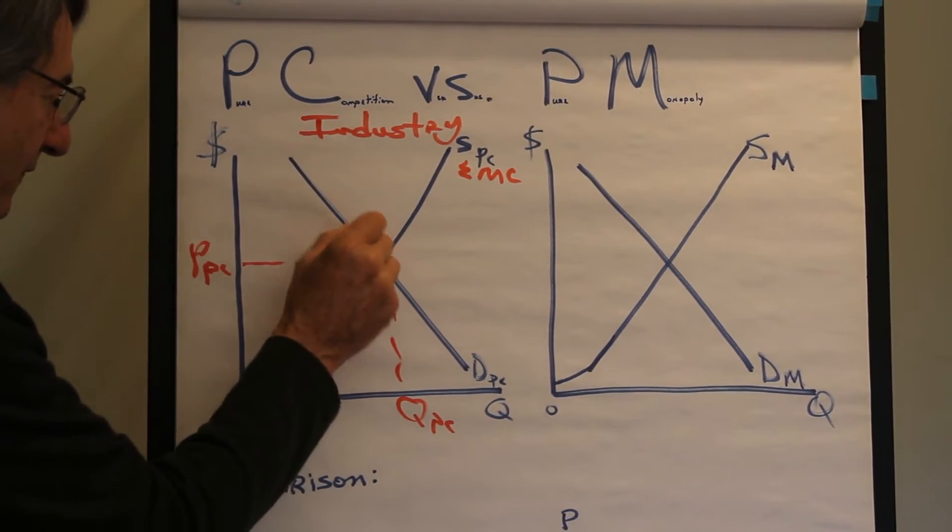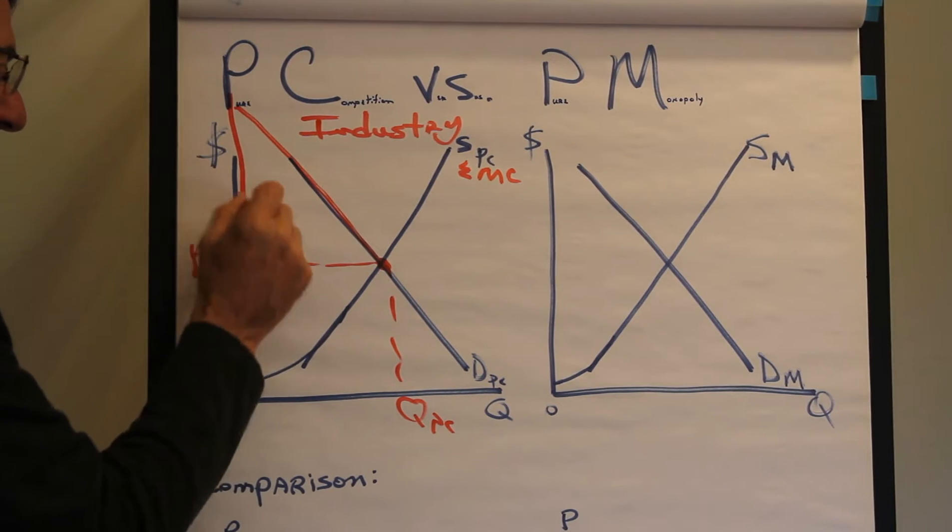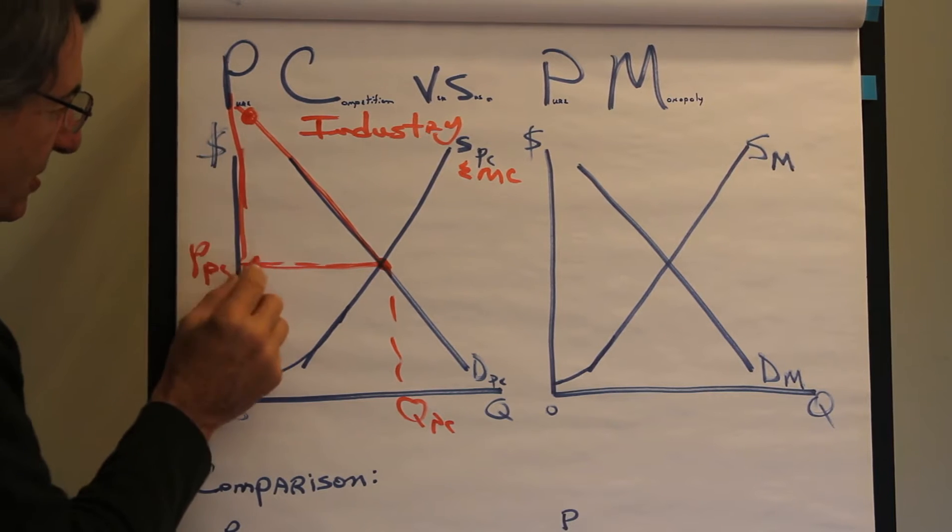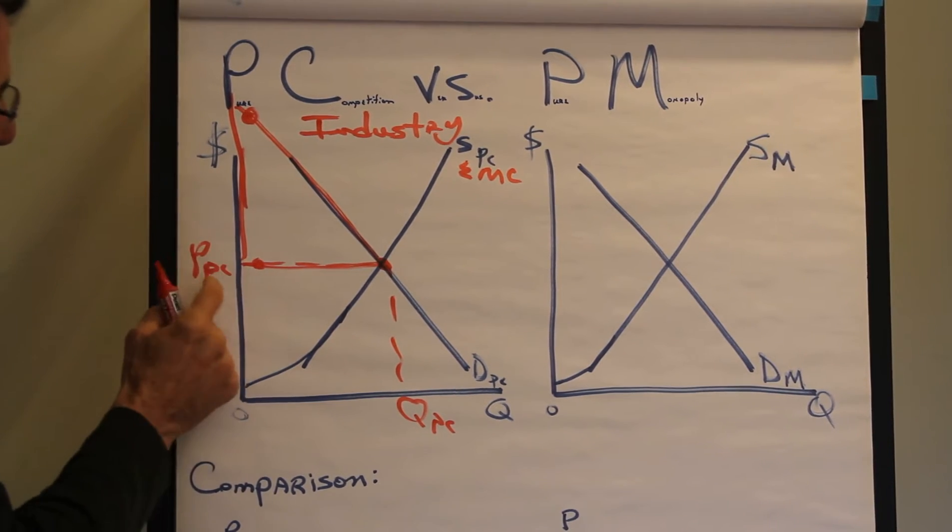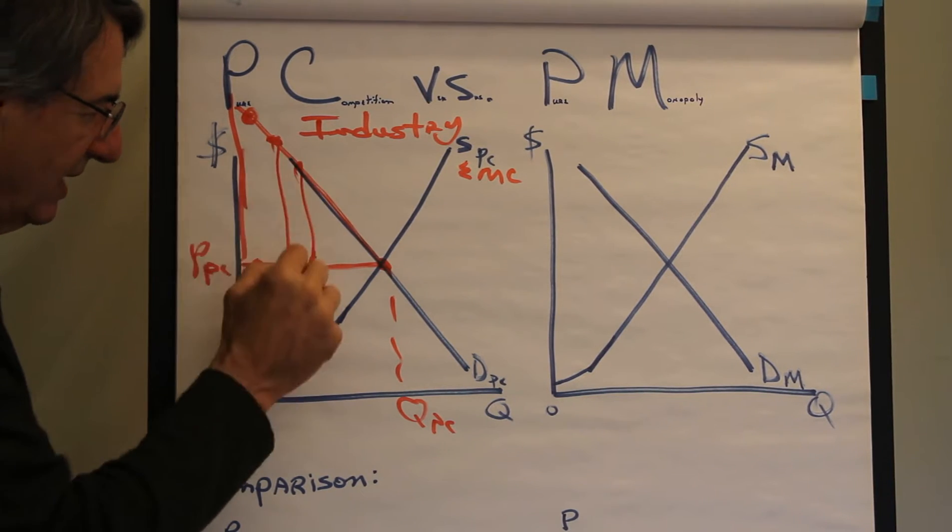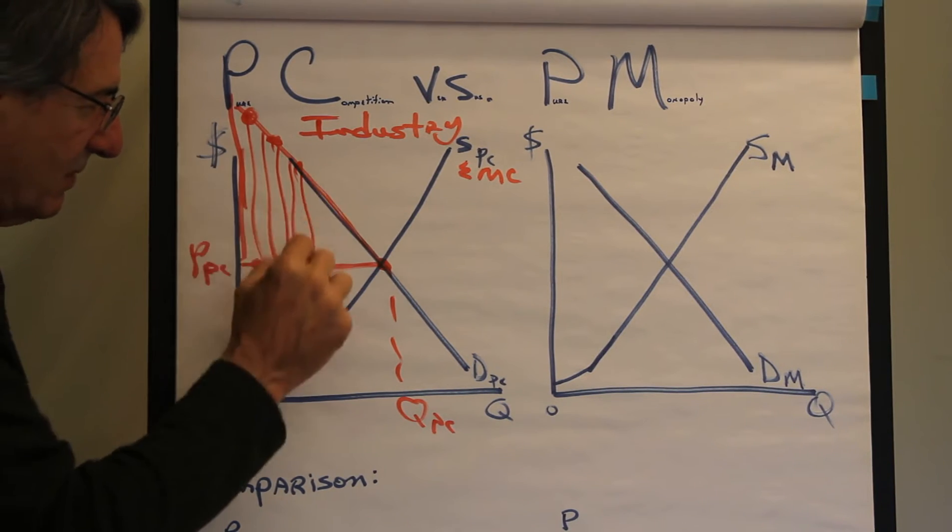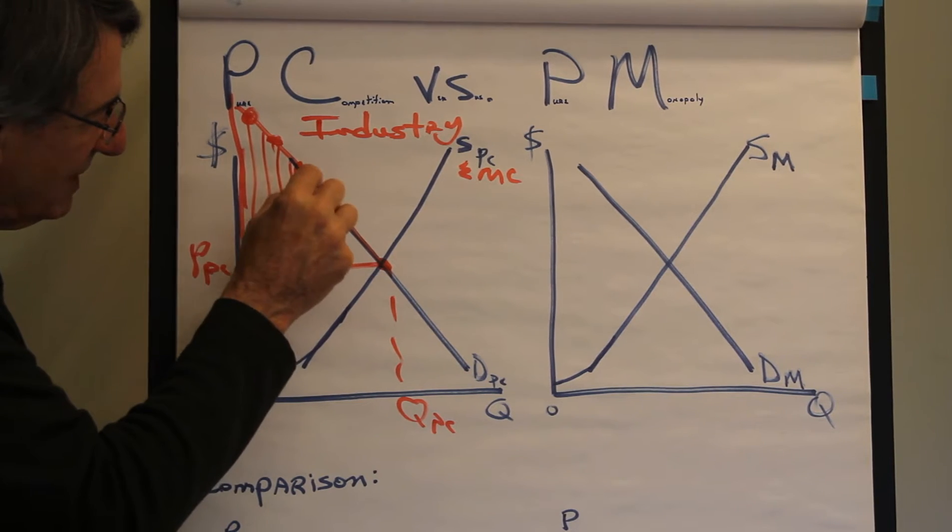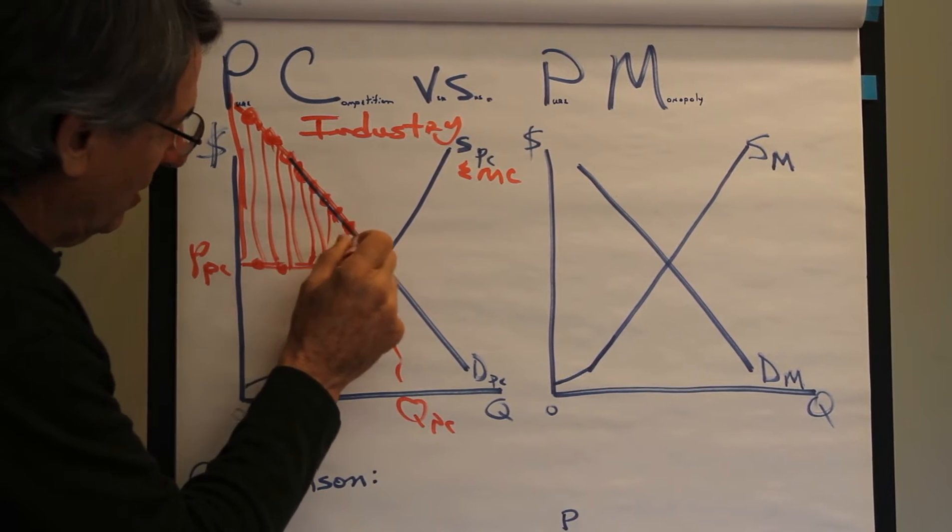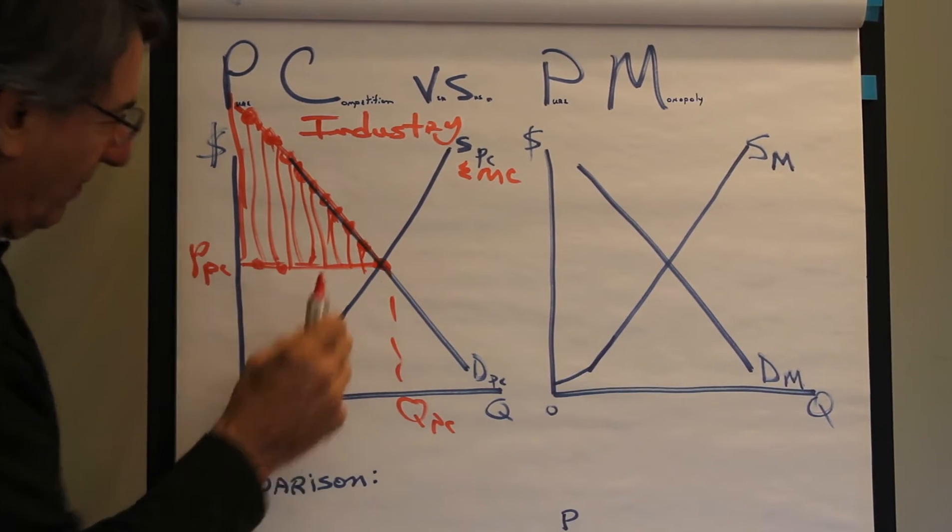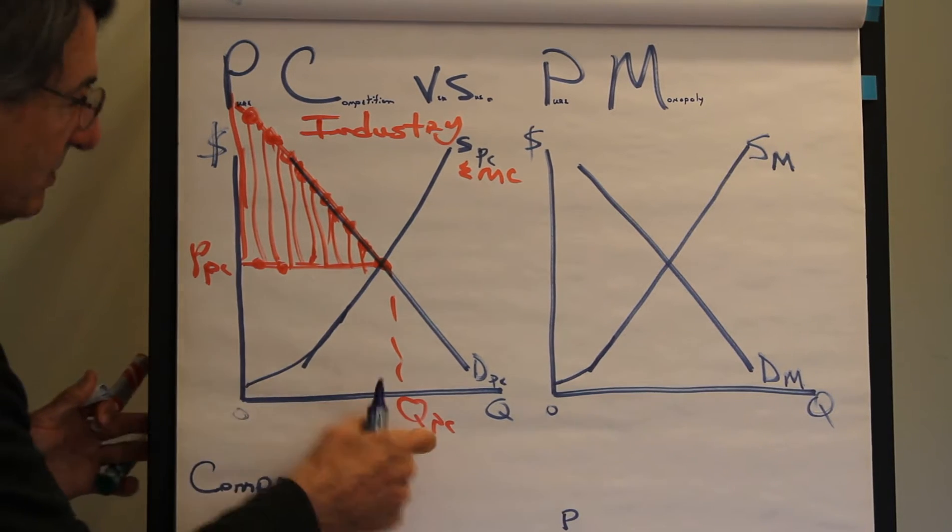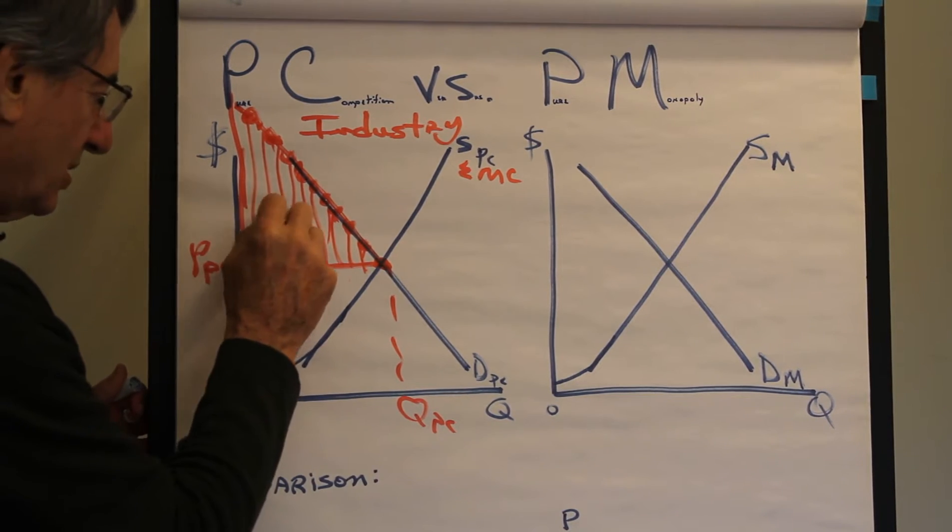And if we continue this up a little bit, this entire area is the difference between the maximum this consumer is willing to pay and the market price. Maximum, actual, maximum, actual. And all of these stripy lines represent each of these buyers consumer surplus. And so this whole stripy area represents the total of consumer surplus.